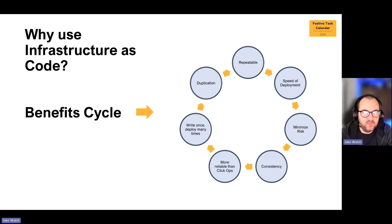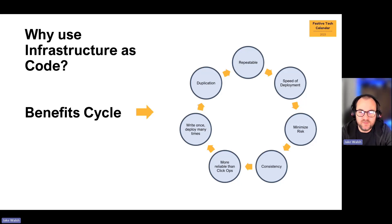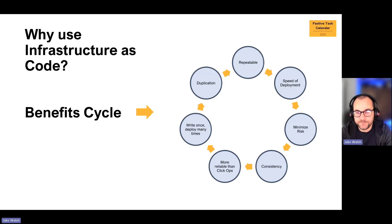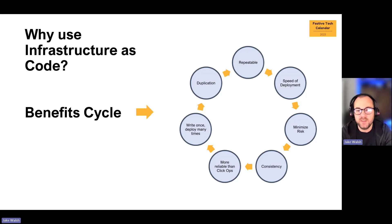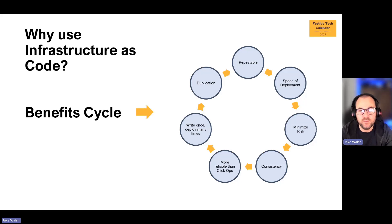Infrastructure as code usage can be viewed as a benefit cycle. As you adopt it, the benefits become cyclical — because things are more repeatable, your speed of deployment increases. That repeatability and speed enables better testing, so your risk is minimized. Deploying repeatedly from the same template increases consistency and reliability. You can write once and deploy many times, which again minimizes risk and increases speed. All these benefits snowball into one another.